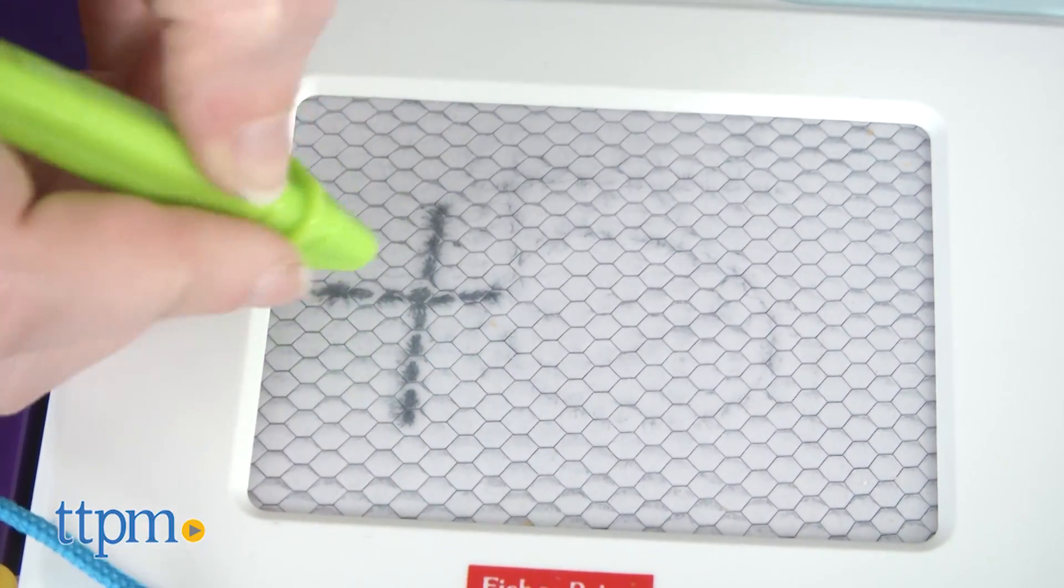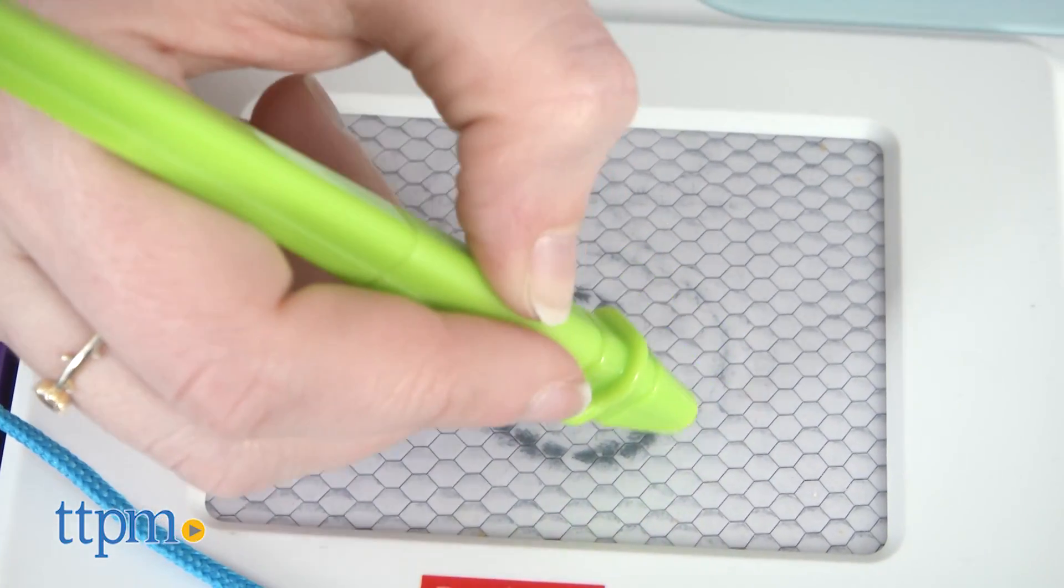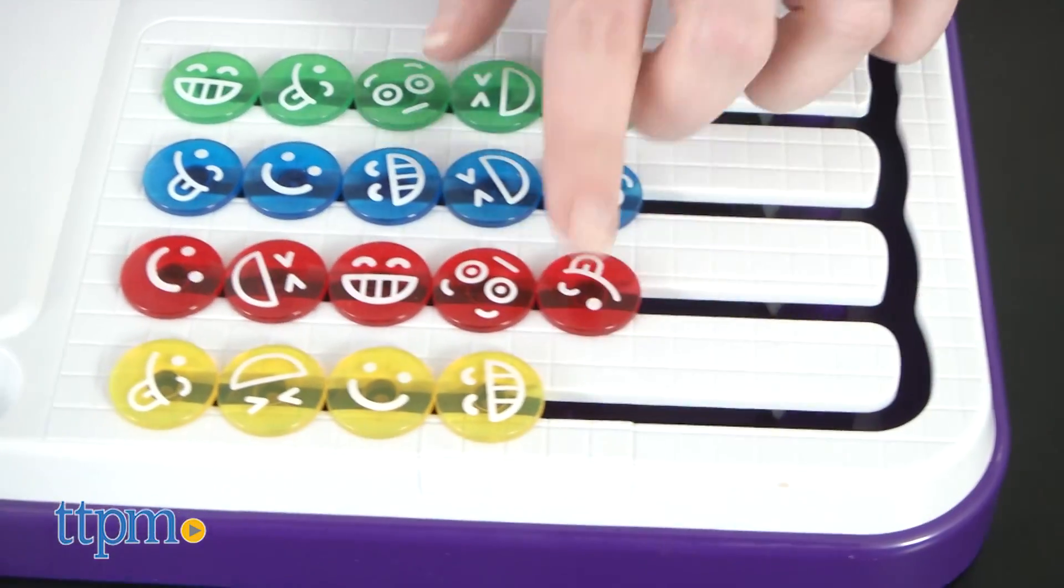We think this one is going to get a lot of repeat play and multi-child use in your household or on the go. The Think and Learn Count and Add Math Center is from Fisher-Price and it's for ages three to six.